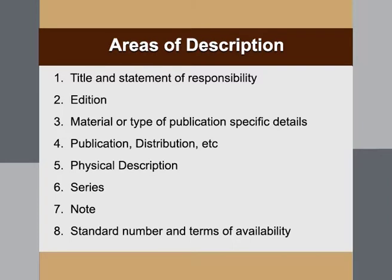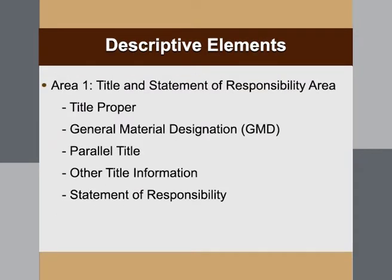Every element will have its areas and sub-elements. The areas of description are: title and statement of responsibility, edition, material or type of publication specific details, publication and distribution, physical description, series, note, and standard number and terms of availability. These 8 are the broad areas spread into different paragraphs and structures. We will now see the descriptive elements one by one, starting with Area 1: title and statement of responsibility.